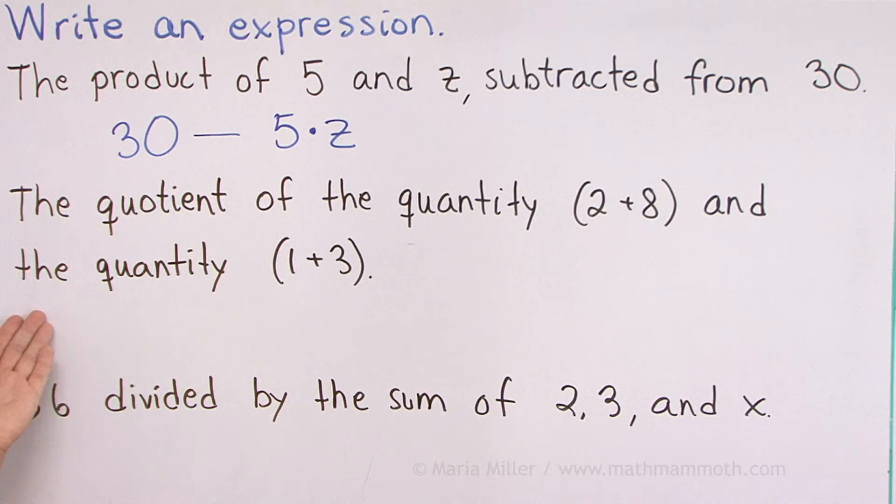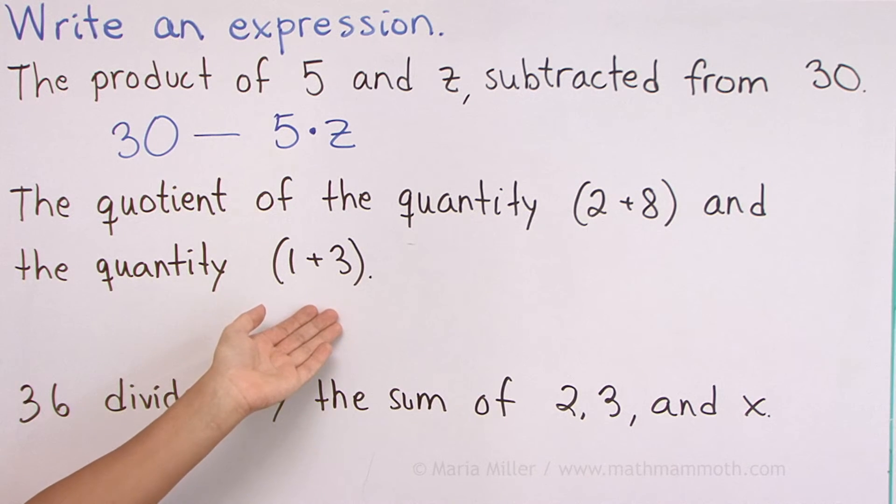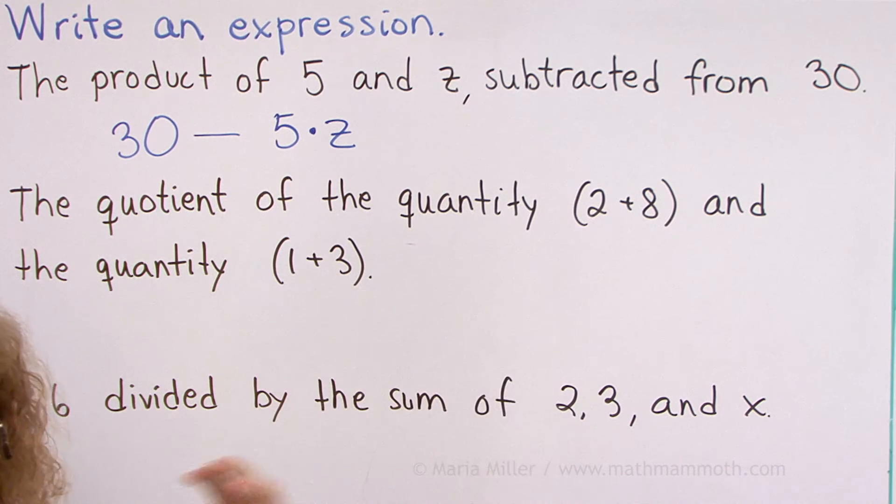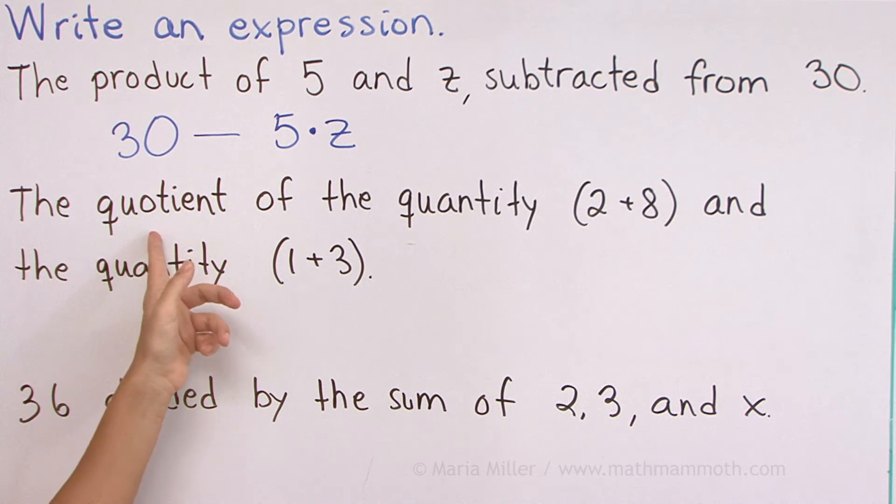The quotient of the quantity 2 plus 8 and the quantity 1 plus 3. Okay. The quantity is here, meaning this 2 plus 8, this sum. Okay. But we're going to write a quotient. That means a division, right?